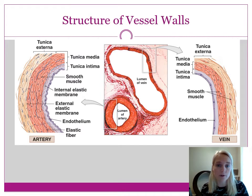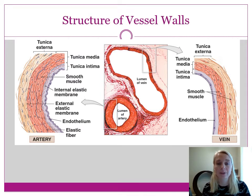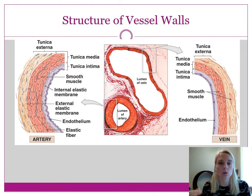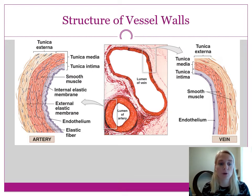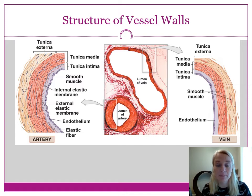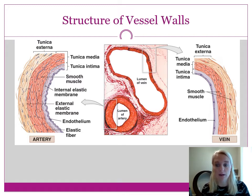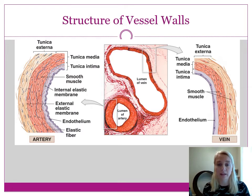When we look at the walls of arteries, veins, and capillaries, there are three layers called tunics — tunic just means coat or layer. The tunica externa is the outermost layer, the tunica media is the middle layer, and the tunica intima is the innermost layer. Your lab manual might call it tunica interna, which is fine — either term is acceptable for the innermost layer.